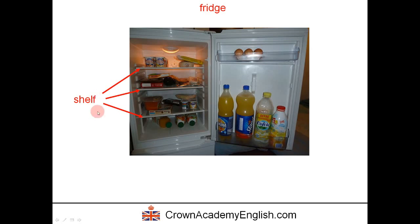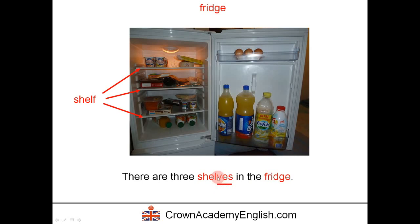The singular form is 'shelf' and the plural form is 'shelves'. There are three shelves in the fridge. This is because it is an irregular plural — when a noun ends in the letter F, in the plural form we remove the F and add V-E-S. It's one syllable: shelves.